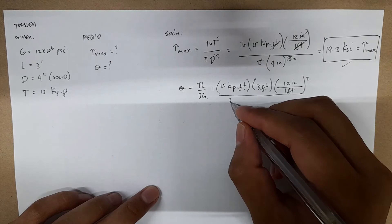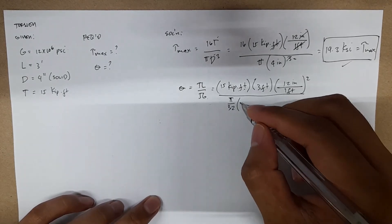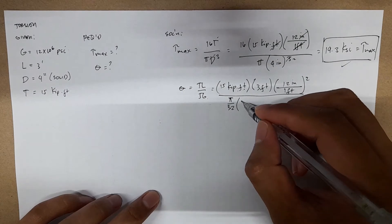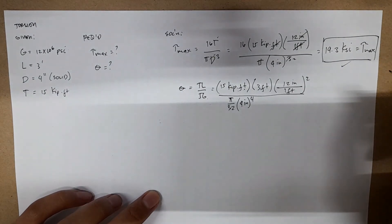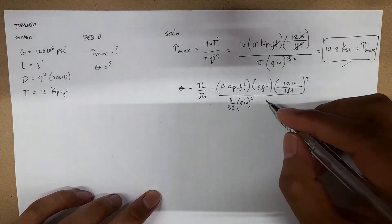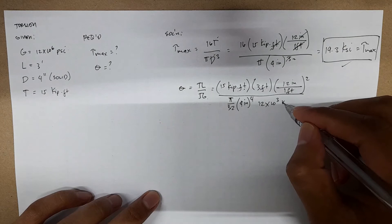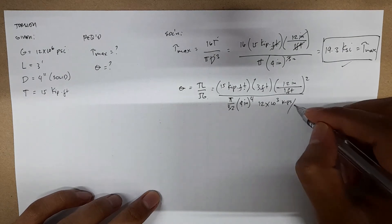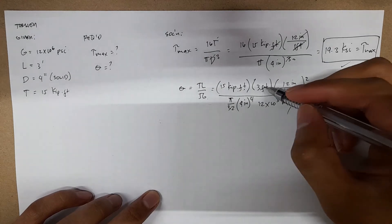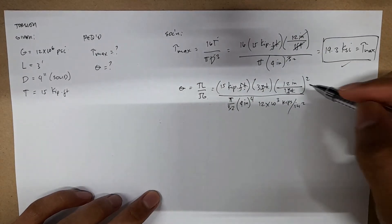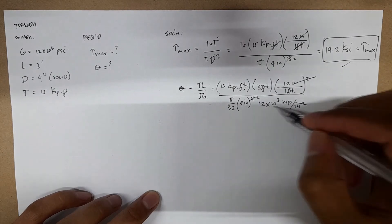We have J, which is π over 32 times D to the fourth, which is 4 inches to the fourth. And we have G, which is 12 times 10 to the third kips per inch squared. This cancels out—both of them cancel out, the inches squared. We also cancel one of the inches here.